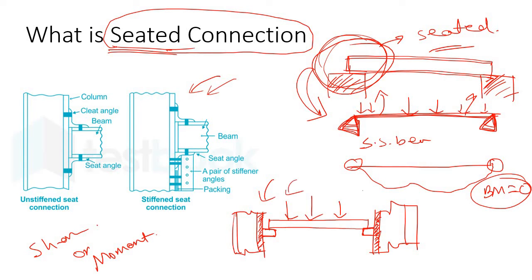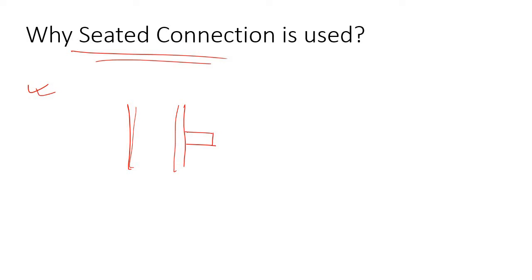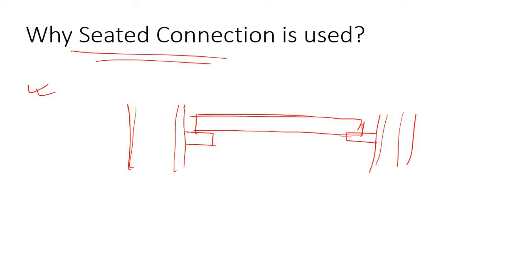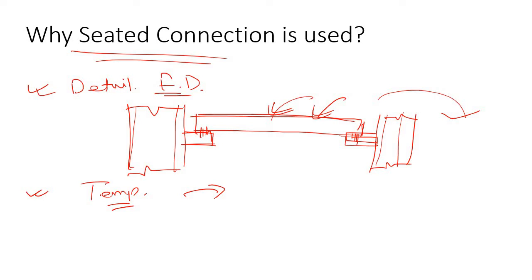Why is a seated connection used? As you can see, this is a very simple type of connection. Whenever you need a simple connection, you can use the seated connection because you don't need a detailed fabrication drawing — you have much flexibility to place the beam over the two supports. Also, if you need to use the beam temporarily and after some time move it to another location, you can easily displace the beam by simply removing the bolts.